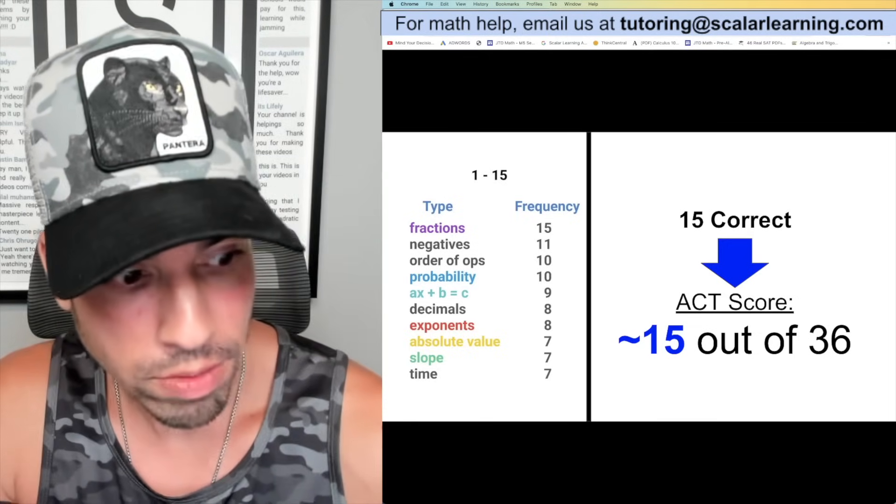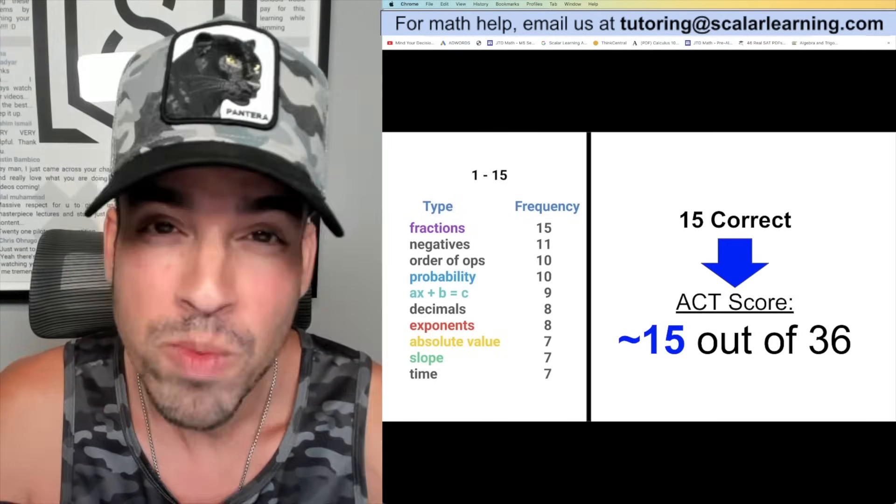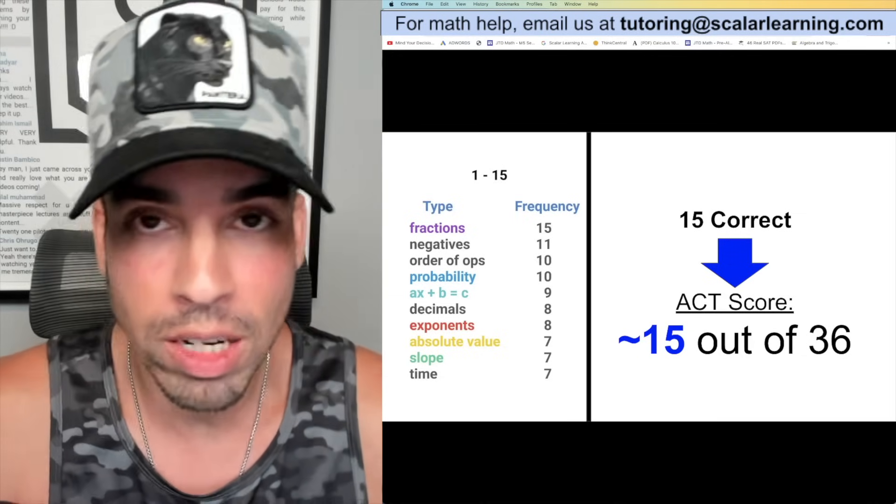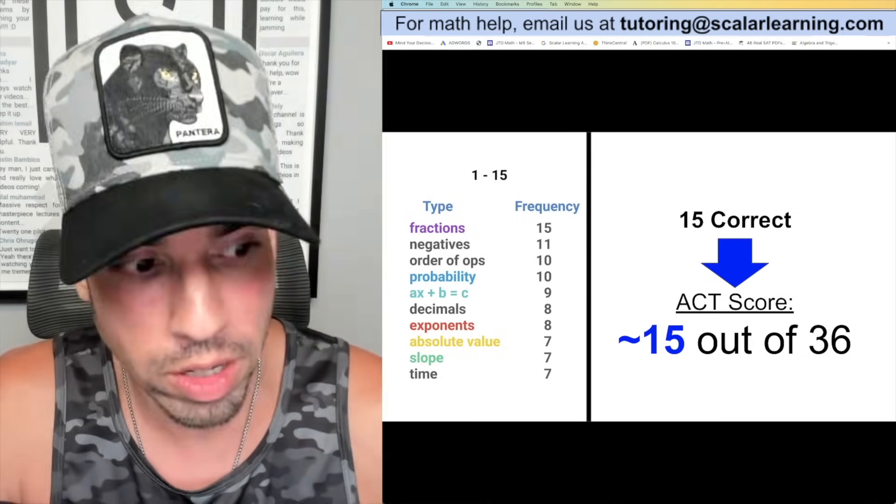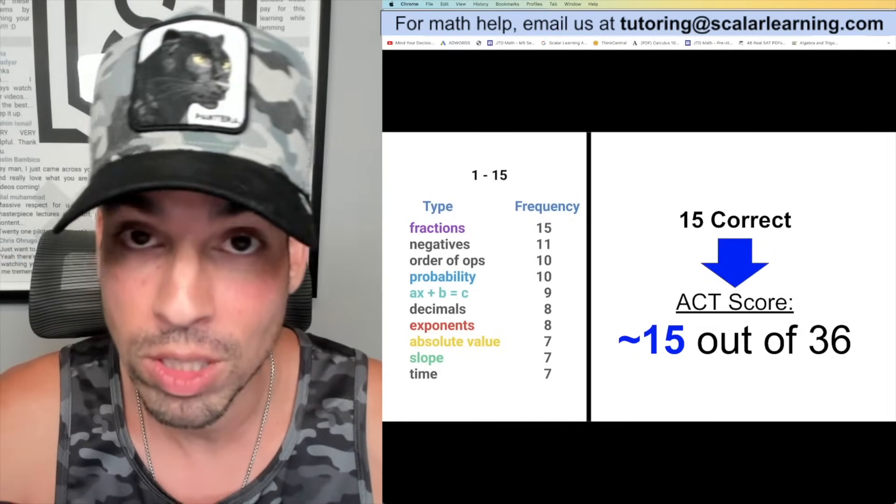When we look at the rest of these categories - negatives, order of operations - these are a lot of the core fundamentals, the basics of mathematics, arithmetic, etc. We see a little bit of slope, a little bit of linear equations. This tells you that if you're in this zone and this is what you're targeting for this weekend, really shore up your core math ability.